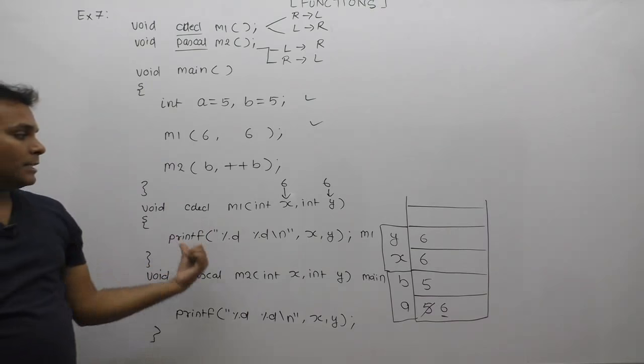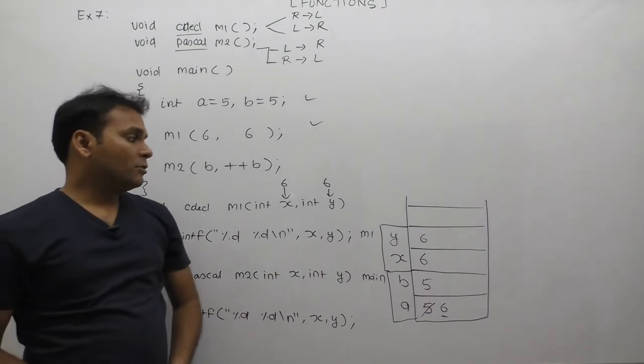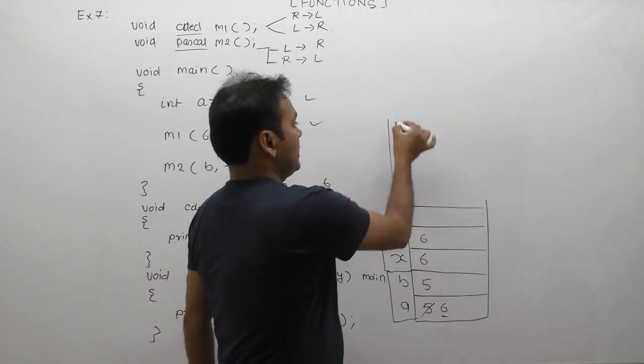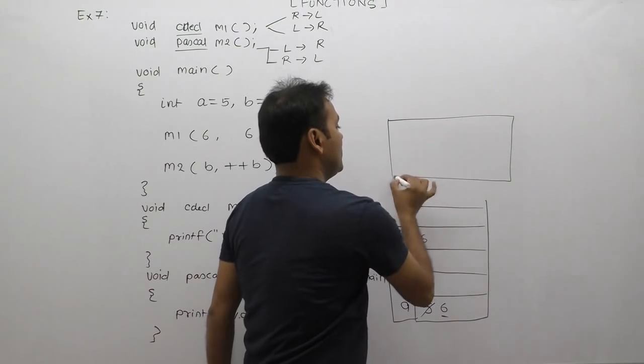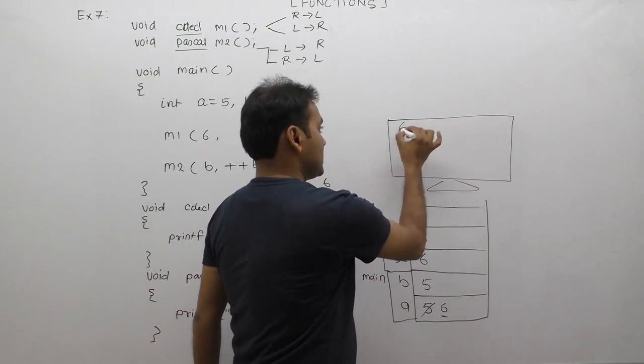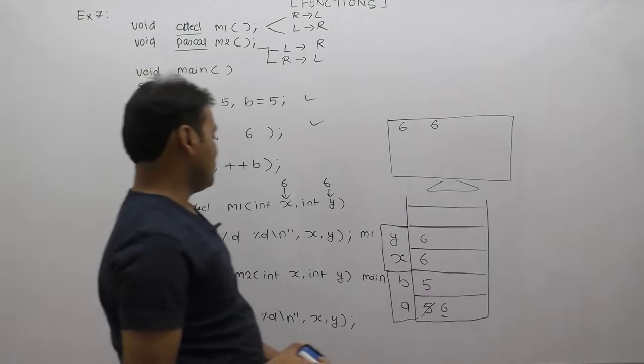Then the function displays the value of x and y. Both are having the same value, exactly 6. This is the displayed value of the first function.